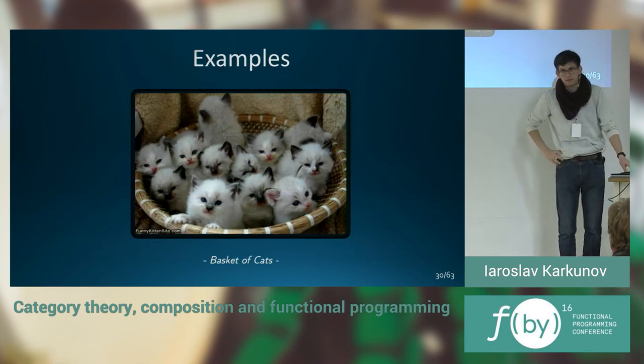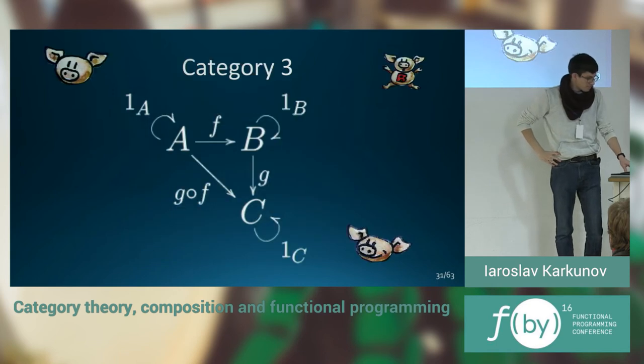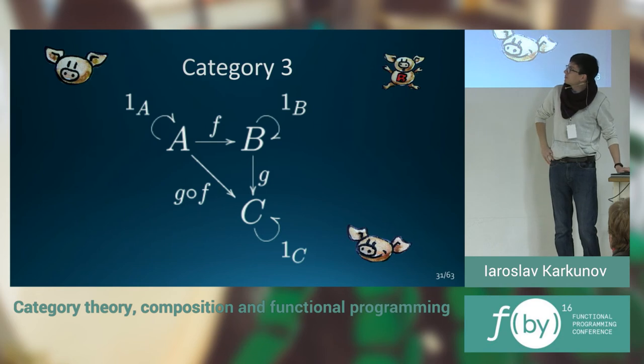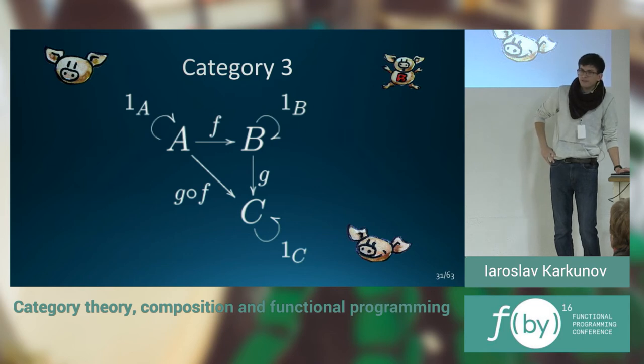Let's talk about the basket of cats. Some examples. As you have seen, piggies. Those are more abstracted piggies. And that is category three. It consists of three objects and just two morphisms with their composition. So actually, it has three morphisms, three identities, and three objects.